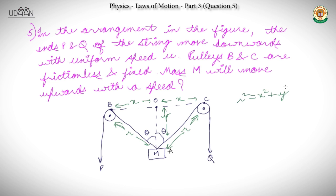Now we will differentiate both sides with respect to time. So we have 2R·(dr/dt) = 2X·(dx/dt) + 2Y·(dy/dt).